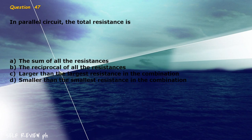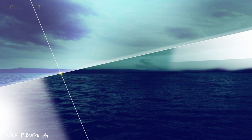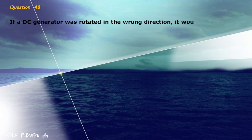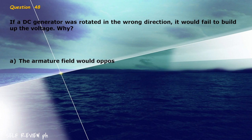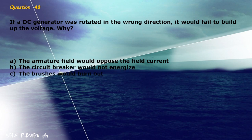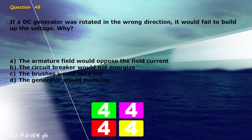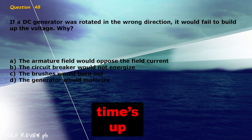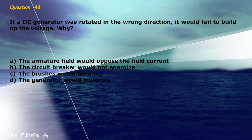Question 48: If a DC generator was rotated in the wrong direction, it would fail to build up the voltage. Why? A) the armature field would oppose the field current, B) the circuit breaker would not energize, C) the brushes would burn out, D) the generator would motorize. The correct answer is letter A, the armature field would oppose the field current.